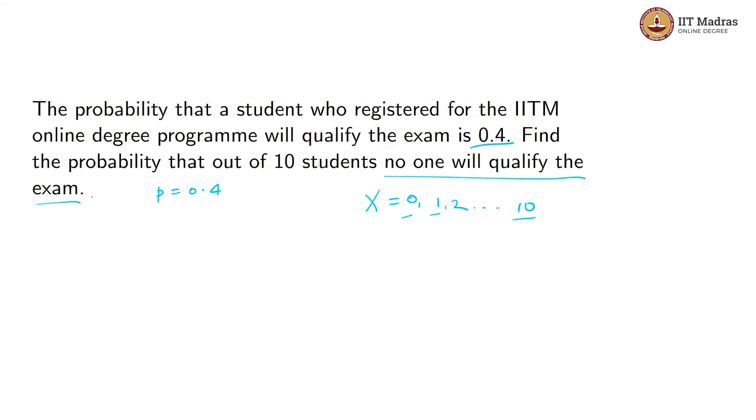If you pick a particular student, that student will either qualify the exam or not qualify the exam. Assume there won't be any case where the student is in between. So basically, what we have to find is the probability that X equals 0.